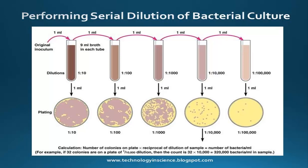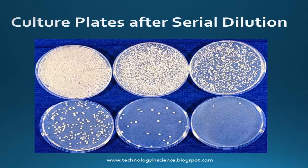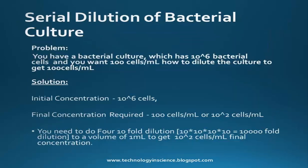For example, if 32 colonies are on a plate from a 1 in 10,000 dilution, the count is 32 × 10,000 = 320,000 bacteria per ml in the original sample. Once you plate from each dilution, you will see a reduction in colony numbers as you progress to lower dilutions.